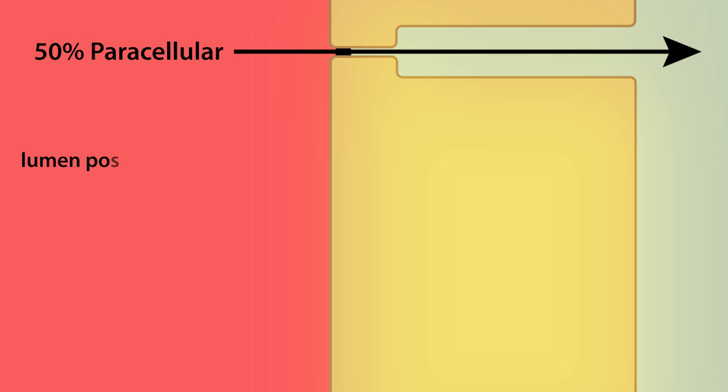About 50% of the sodium reabsorbed along the thick ascending limb occurs by the paracellular pathway, which is driven by the lumen-positive potential. The lumen-positive potential is established by the presence of the potassium ion channels in the apical membrane.